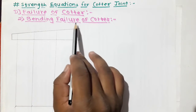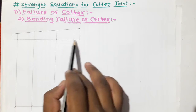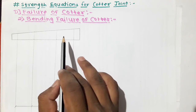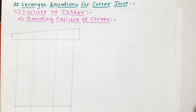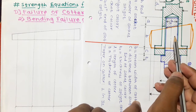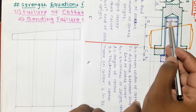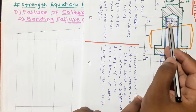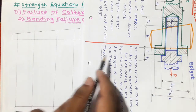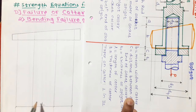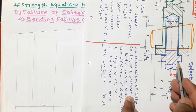Let us talk about the bending failure of a cotter. The cotter is drawn horizontally because it is treated as a simply supported beam. First, let us determine the portion of cotter present in the socket and spigot. The middle portion of cotter is present in the spigot, and the length of cotter present in the spigot is d2, which is the diameter of the spigot.